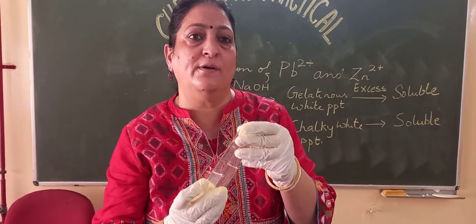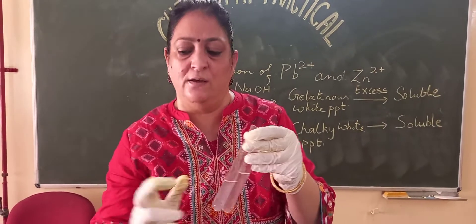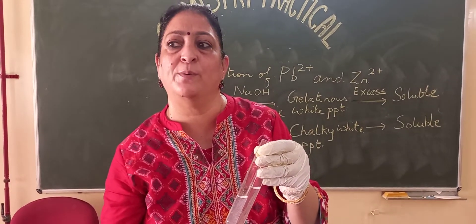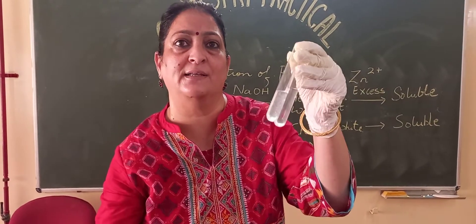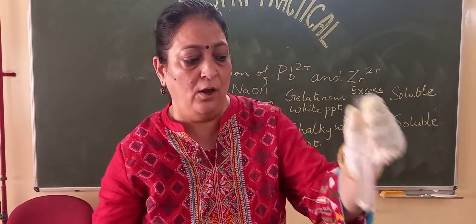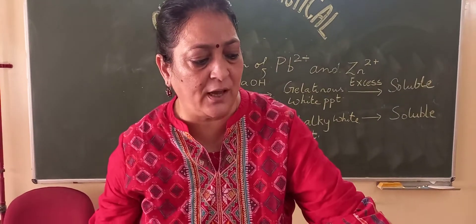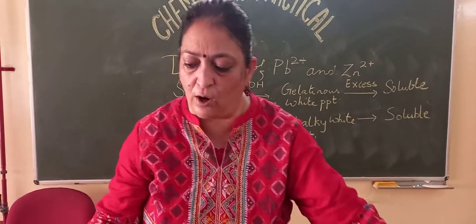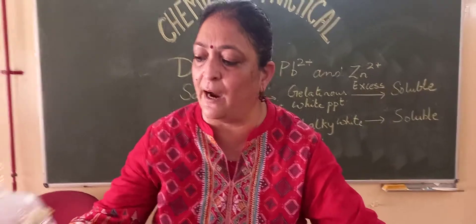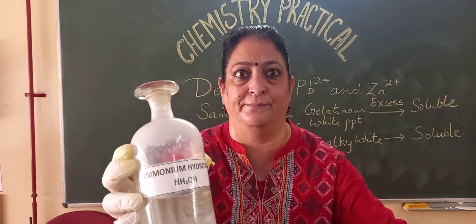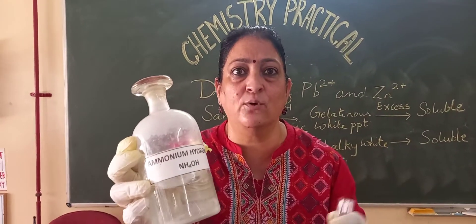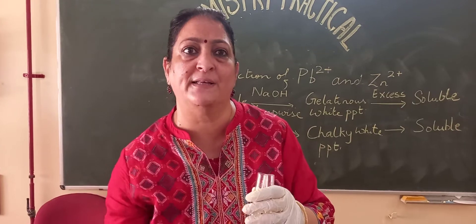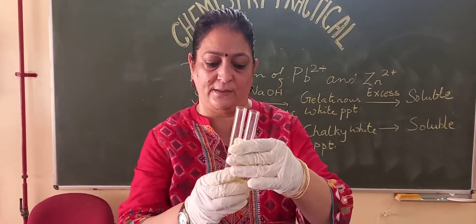We should never rely on NaOH if we have to distinguish between zinc ions and lead ions. The chemical we should resort to is ammonium hydroxide — it is going to help us in the identification of Pb²⁺ and Zn²⁺.